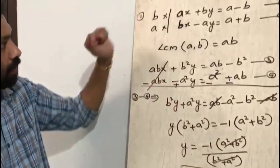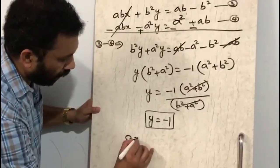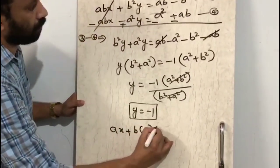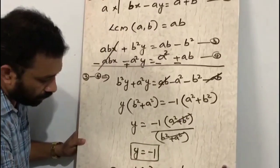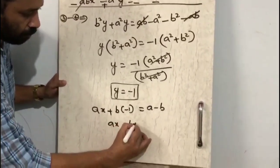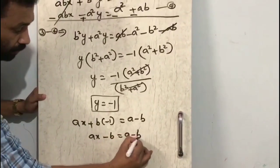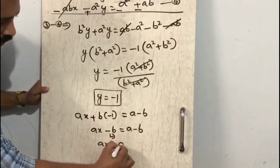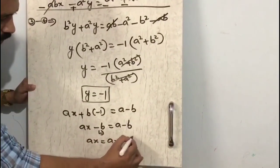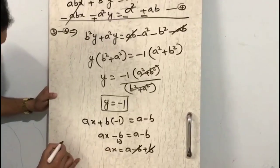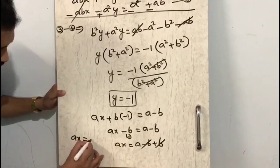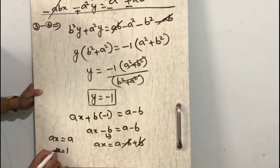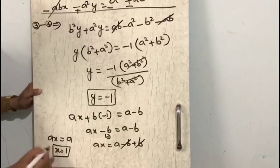After getting y = -1, substitute into the first equation: ax + b(-1) = a - b, so ax - b = a - b. Transposing: ax = a - b + b, so ax = a, therefore x = a/a = 1. So x = 1 and y = -1.